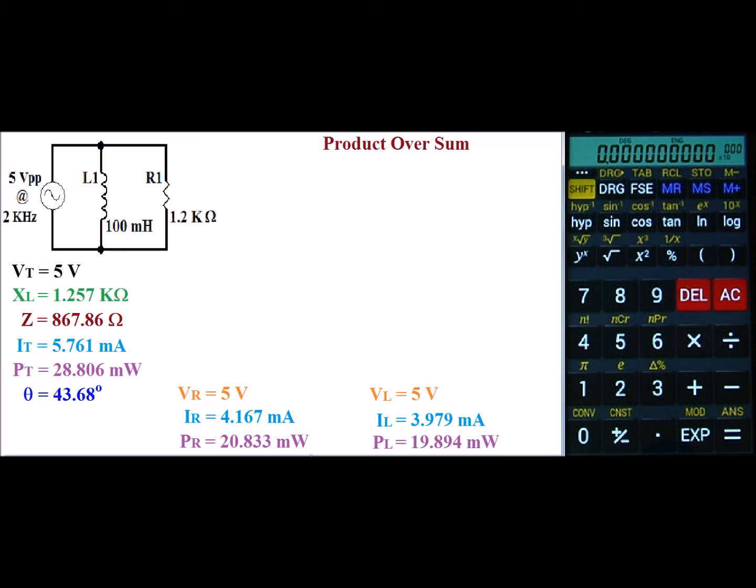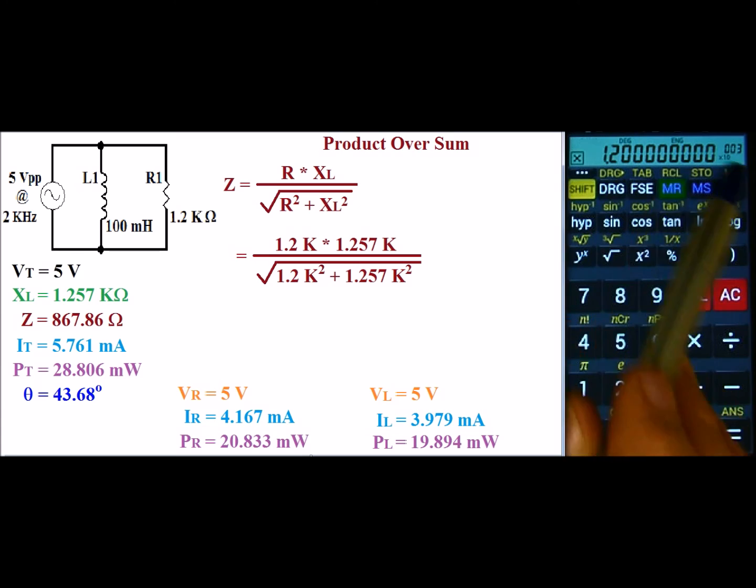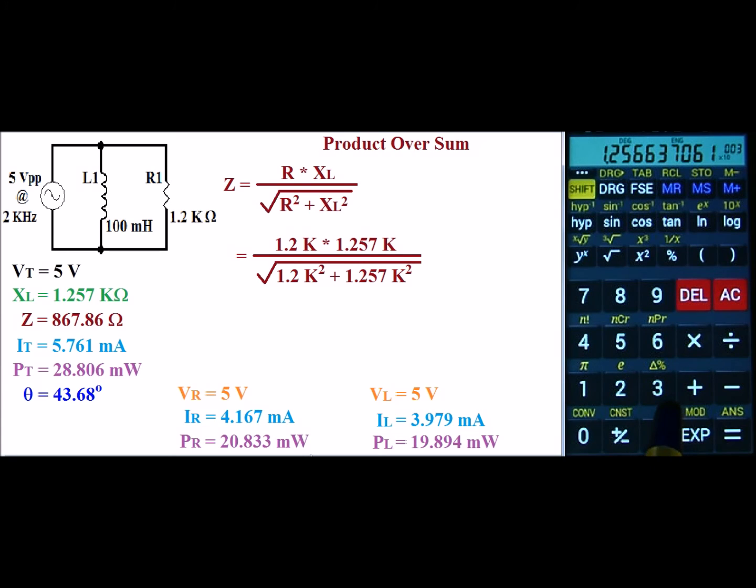All right. So let's go ahead and look at Z using product over sum. The formula would be R times X of L over the square root of R squared plus X of L squared. And as you can see this is going to be a very lengthy formula. So we have 1.2K times 1.257K over the square root of 1.2K squared plus 1.257K squared. So let's go ahead and start. 1.2 exponent 3 times, and I'll go ahead and recall my inductive reactance. And it's 1.5079 meg. And we'll go ahead and store this right there.